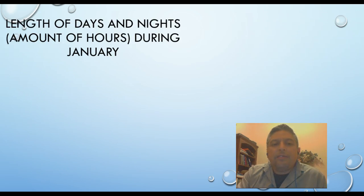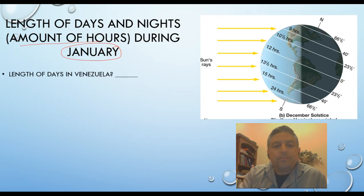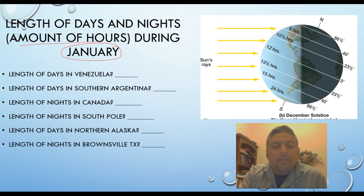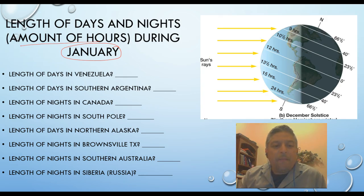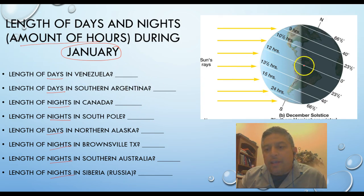Now let's take a look at the other side of the coin. Now we're talking about, once again, amount of hours, but this is January. We want to see Venezuela, Southern Argentina, Canada, South Pole, North Alaska, Brownsville Texas, Southern Australia, and Siberia. Just make sure you pay attention to the length of days or length of nights and give me the amount of hours. Venezuela is right here — nighttime.